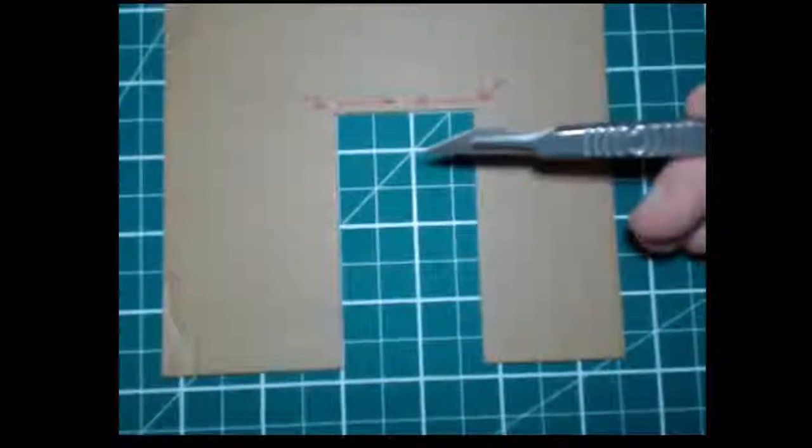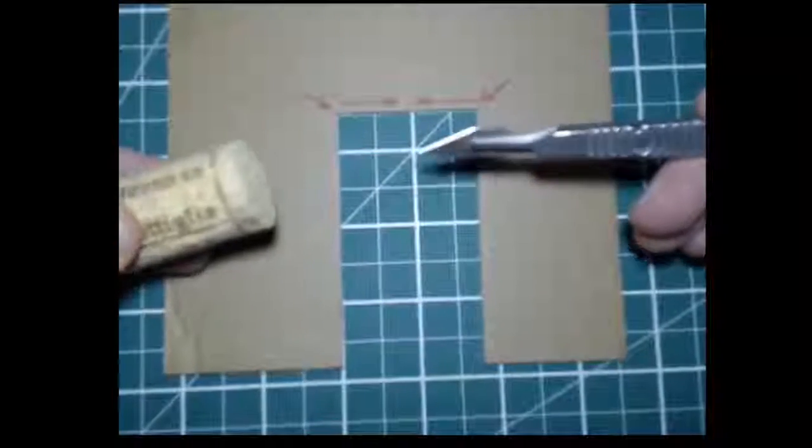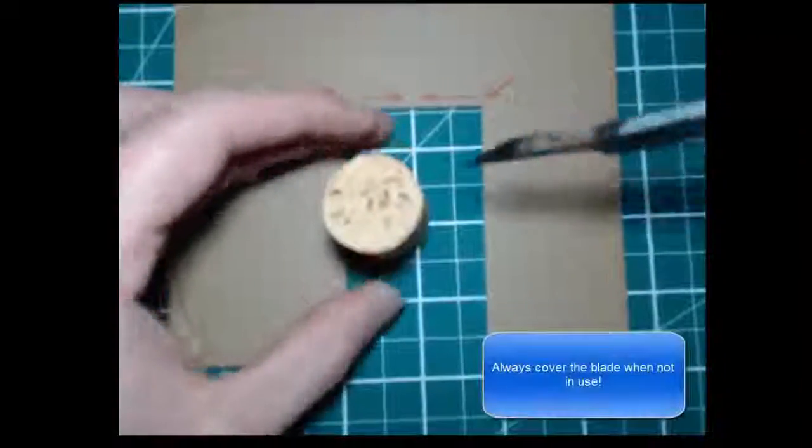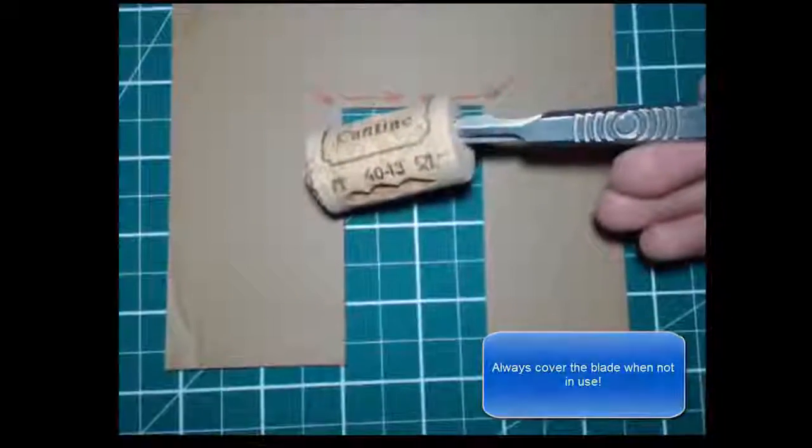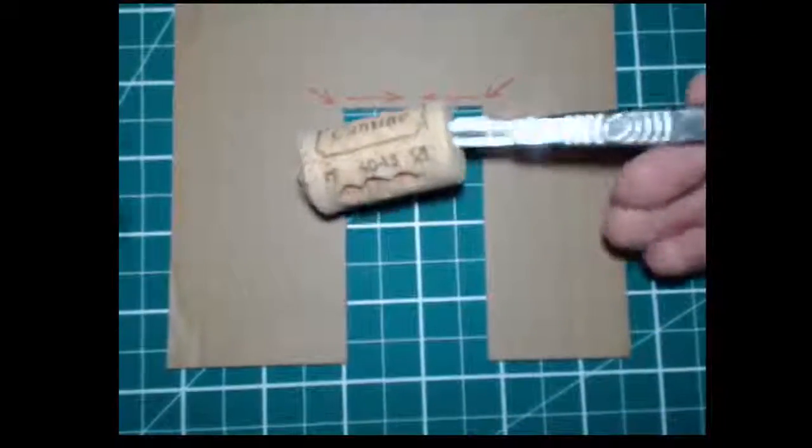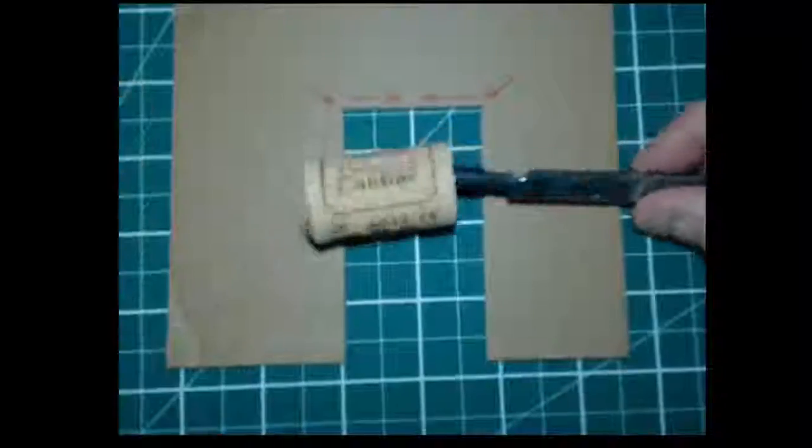Now that I am finished with the scalpel, what I usually do is get a wine cork, leave it down on the table, and just push the tip of the blade into the wine cork to keep it safe. So if anyone wants to place their hands down, they can't get cut.